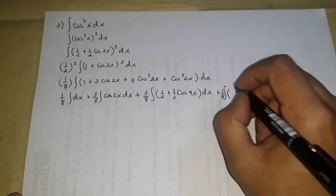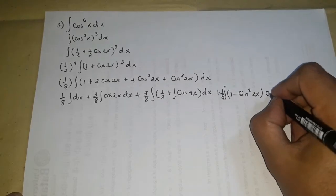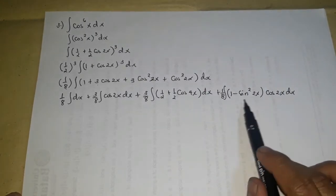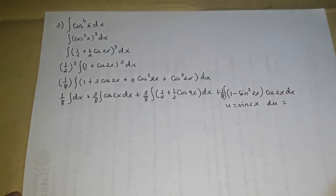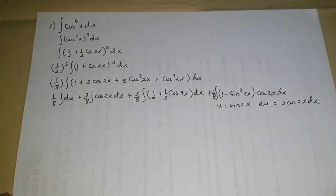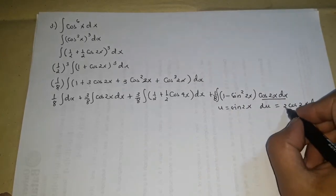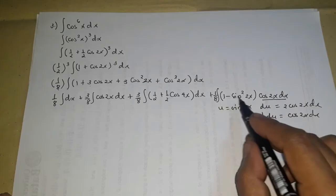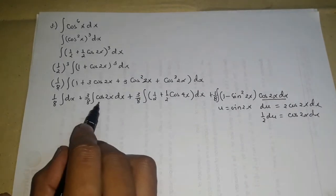For cos³(2x), write it as cos²(2x)·cos(2x) = (1 − sin²(2x))·cos(2x). Let u = sin(2x), then du = 2cos(2x)dx, so cos(2x)dx = (1/2)du. The integral of cos³(2x)dx becomes the integral of (1 − u²)·(1/2)du, and we replace sin(2x) with u and cos(2x)dx with (1/2)du.